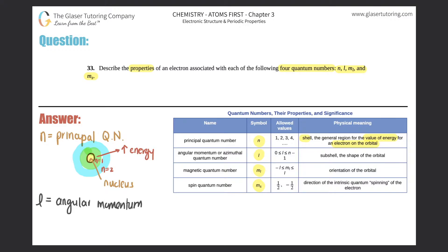What the l number represents is the subshell — specifically, it tells you the actual shape of the orbital. For n equals one, two, three, etc., you have different shapes because you have different subshells. For example, any l equal to zero is classified as an s subshell, and an s subshell always has a circular shape around the nucleus.